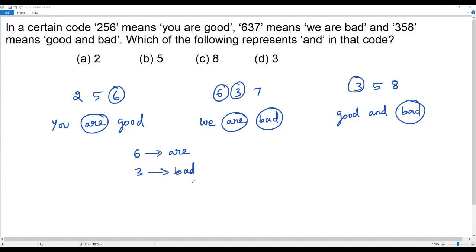Now so far we have compared the first piece, second piece and second piece, third piece. Now let's compare the first piece and third piece. What do we find in common? We find good in common. In code, what do we find in common? We find 5. So clearly 5 represents good.